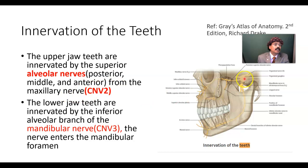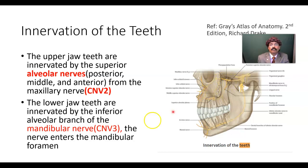This is the trigeminal ganglion. This is the maxillary nerve. This is the mandibular nerve. The maxillary nerve supplies the upper jaw teeth. The lower jaw teeth are innervated by the inferior alveolar branch of the mandibular nerve.